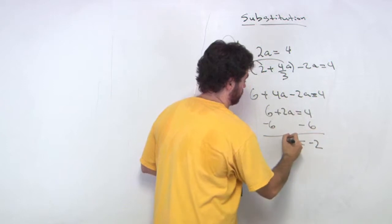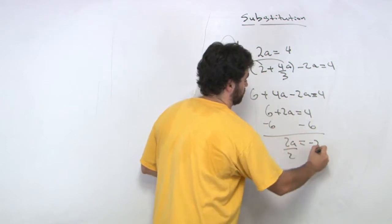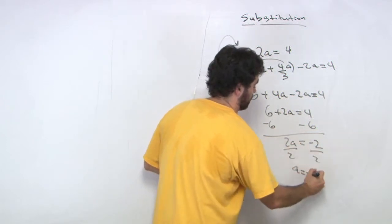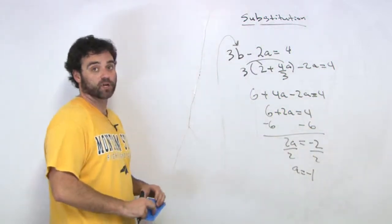I get negative 2, 2a, divided by 2, and a equals negative 1. Not too bad.